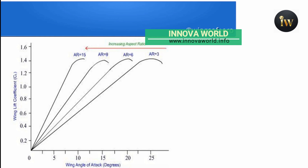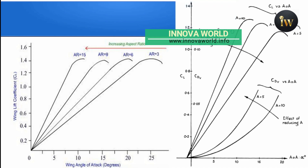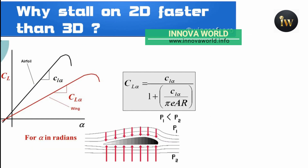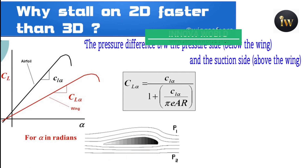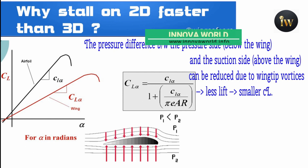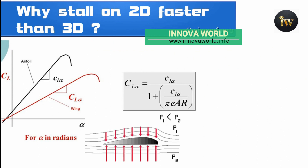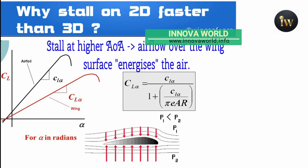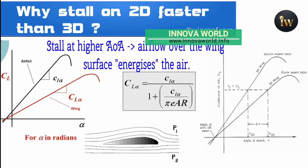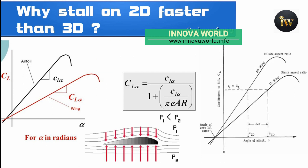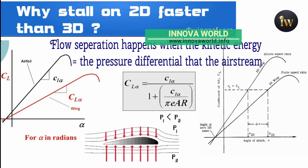In addition, the high lift curve slope conferred by a high aspect ratio is useful on takeoff and landing when the available angle of attack is restricted by the demands of ground clearance and pilot vision. Regarding why a 2D wing stalls faster than a 3D wing: in a 3D wing, air is allowed to flow over the wing tip into the low pressure zone over the wing, reducing the overall pressure differential and overall lift. This explains the stall at a higher angle of attack, because the additional flow over the wing surface energizes the air. Flow separation happens when the kinetic energy equals the pressure energy.